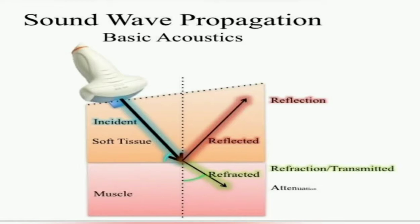Ultrasound waves are not transmitted through air; therefore a coupling medium is required which transmits the ultrasound waves from the ultrasound head into the deep tissues. The most commonly used couplant is aquasonic gel, which has a 72% transmission rate.